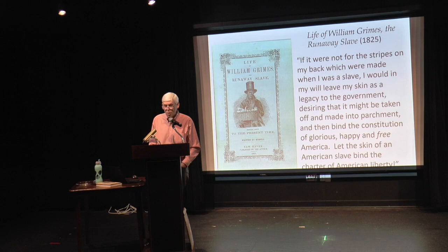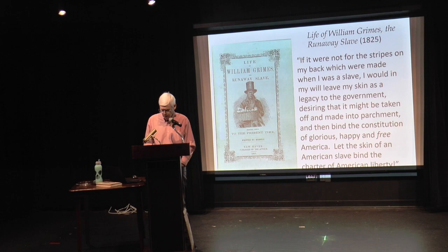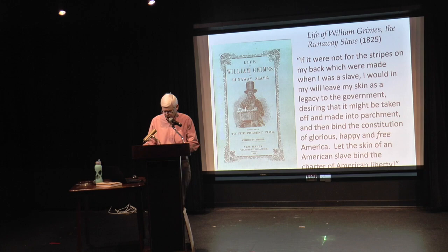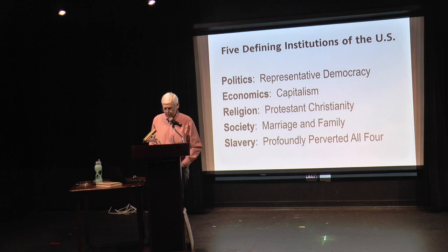The narratives also record many instances in which slaveholders fathered children by enslaved women — for instance, William Grimes's father was a Virginia blue blood. Many slaveholders had no compunctions about selling their mixed-race offspring for profit or to avoid social scandal. Mary Boykin Chesnut, wife of a leading US Senator and a slaveholder from South Carolina, confided to her diary: 'Like the patriarchs of old, our men live all in one house with their wives and their concubines, and the mulattoes one sees in every family exactly resemble the white children.'